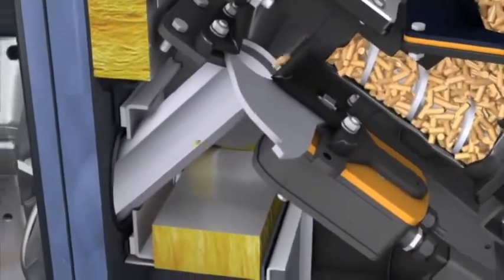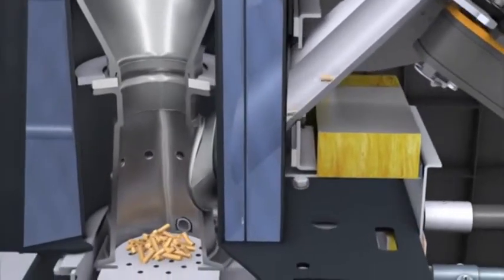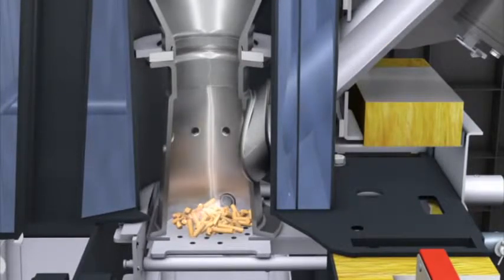The Stoker Auger transports the pellets to a drop tube. Piece by piece, the pellets are gently dropped onto a grate in the sturdy steel combustion chamber. There, they are ignited by a stream of hot air.